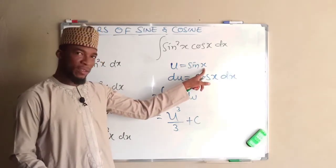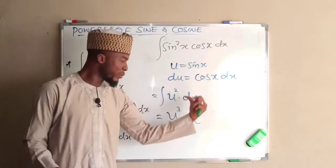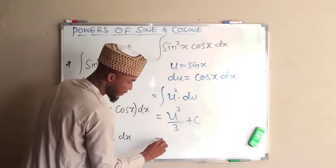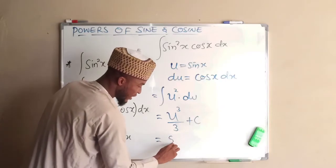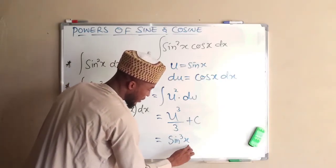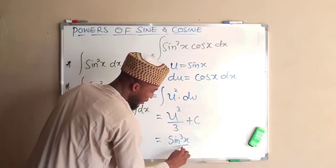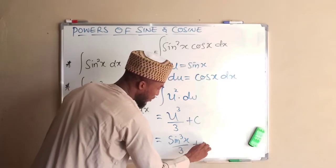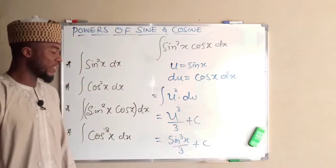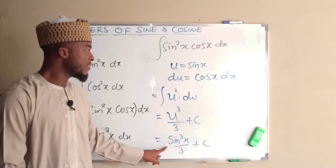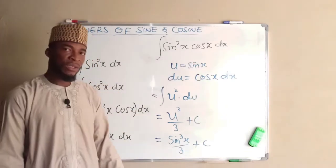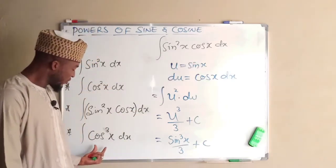Integrating U squared gives U cubed over 3. Since we substituted U equal to sine X, we bring it back: the result is sine cubed X divided by 3 plus the constant of integration C. This is how to integrate sine squared X times cos X.